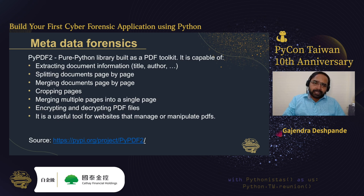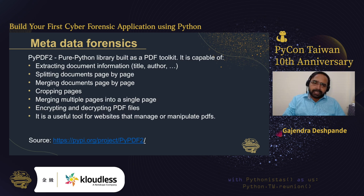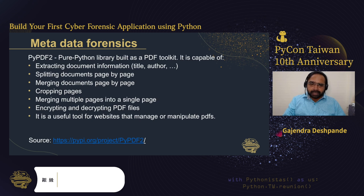The next module is PyPDF2 — a pure Python PDF toolkit capable of extracting document information such as title, author, and file size. You can split documents page by page, merge documents, crop pages, merge multiple pages into a single page, and encrypt or decrypt PDF files. It is a very useful tool for websites that manage or manipulate PDFs.